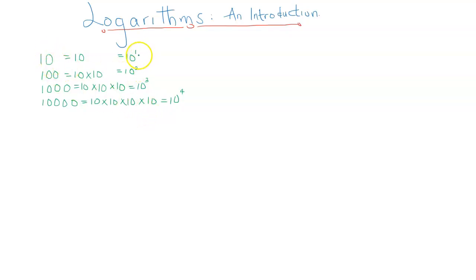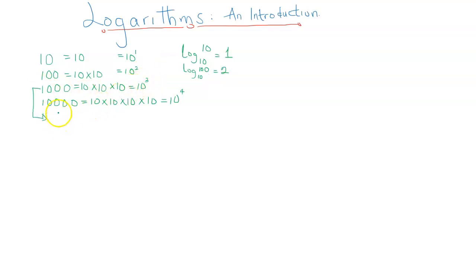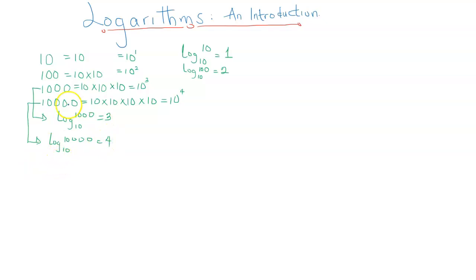10 is 10 to the power of 1 because the logarithm of 10 to base 10 is equal to 1. 100 is 10 to the power of 2 because the logarithm of 100 to base 10 is 2. A thousand is 10 to the power of 3 because the logarithm of 1000 to base 10 is 3. And 10,000 is 10 to the power of 4 because log of 10,000 to base 10 is equal to 4. None of this is restricted to base 10 — I can extend it to any number.